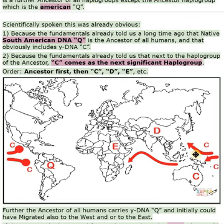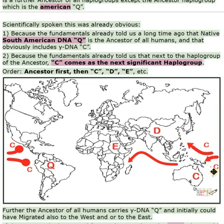Scientifically spoken this was already obvious. One, because the fundamentals already told us a long time ago that Native South American DNA Q is the ancestor of all humans, and that obviously includes Y-DNA-C. Two, because the fundamentals already told us that next to the haplogroup of the ancestor, C comes as the next significant haplogroup. Order: ancestor first, then C, D, E, etc.